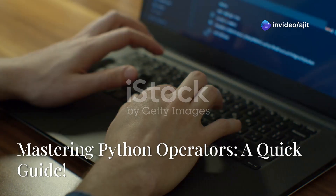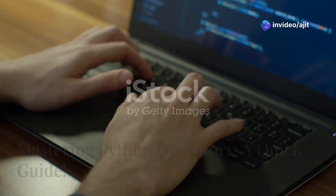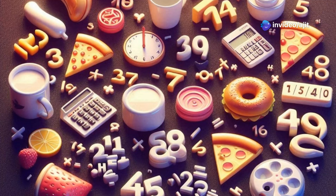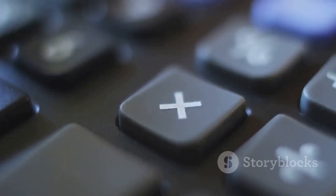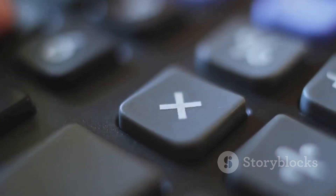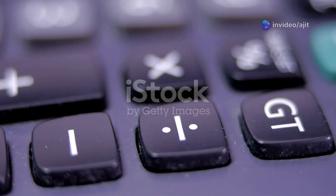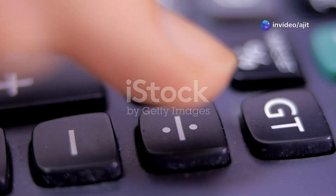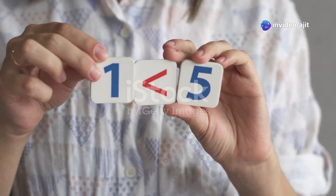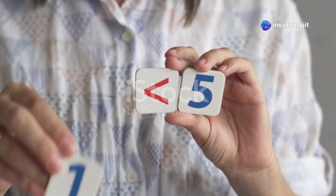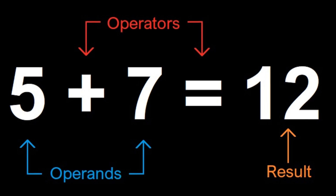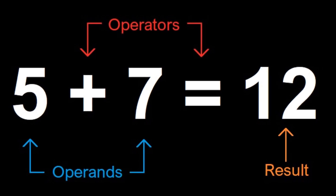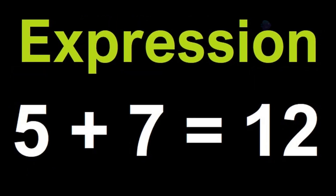Hey there, let's next learn more about Python operators. Operators are special symbols that represent computations like addition for adding two numbers, subtraction to deduct one number from another, multiplication to find the product of two numbers, division to break down a number into equal parts. Then we have comparison operators that check if a condition is met. The values that an operator is applied to are called operands. When you apply an operator to operands, you create an expression.